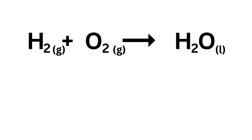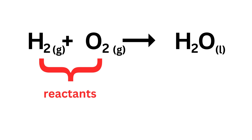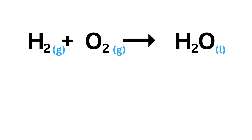Let's take a look at the reaction that occurs between hydrogen gas and oxygen gas. Here's the unbalanced equation. Hydrogen gas H₂ and oxygen gas O₂ react to produce water H₂O, which is a liquid. The substances on the left of the arrow are called reactants — they are the substances present at the beginning of the reaction. The substances on the right of the arrow are called products — they are the substances formed during the course of the reaction. The G and L indicate the states of the substances, gas and liquid, respectively.